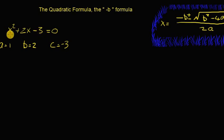One way to do it, a very popular way, is to use the minus b formula. X equals minus b plus or minus the square root of b squared minus 4ac, all over 2a.